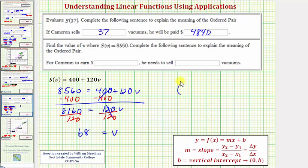As an ordered pair, remember the input is the first coordinate, so we'd have (68, 8560), the given function value. So the meaning is, for Cameron to earn 8,560 dollars for the week, he needs to sell 68 vacuums.